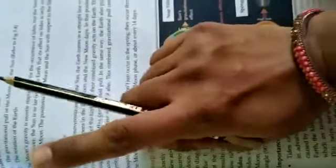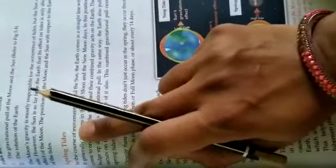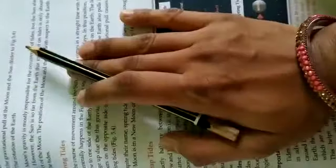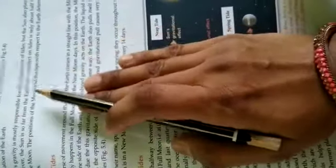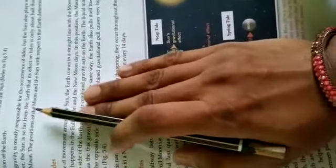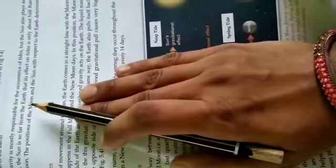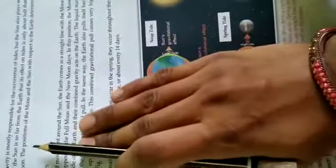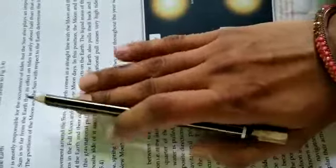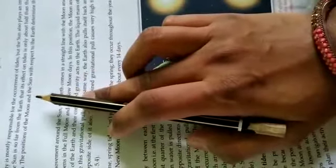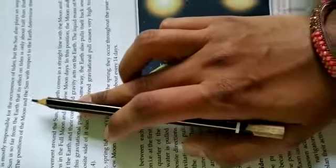Tides are caused by two factors: first, the gravitational pull of the moon and the sun, and second, the rotation of the earth. The moon's gravity is mostly responsible for the occurrence of tides, but the sun also plays an important role. However, the sun is so far from earth that its effect on tides is only about half that of the moon. The position of the moon and sun with respect to earth determines the height of tides.